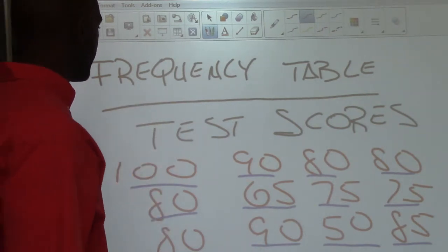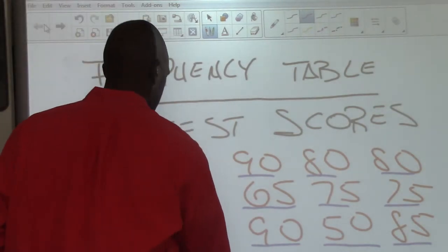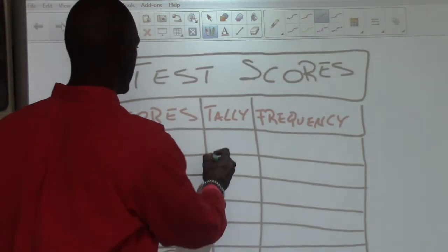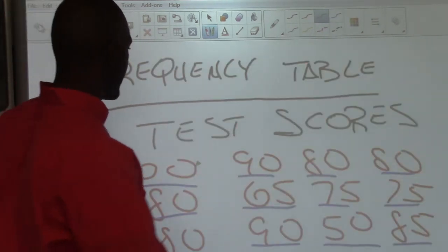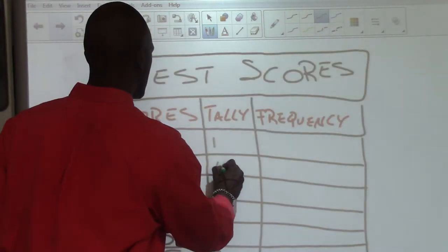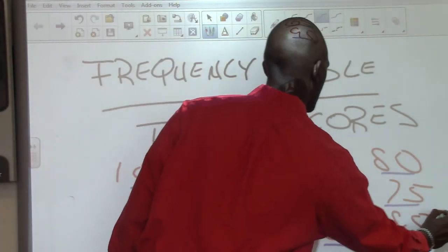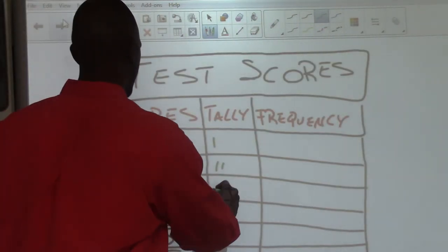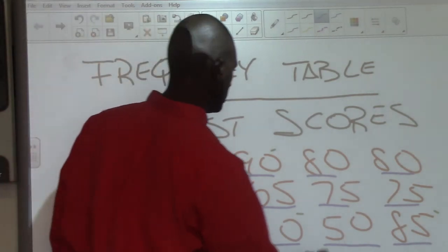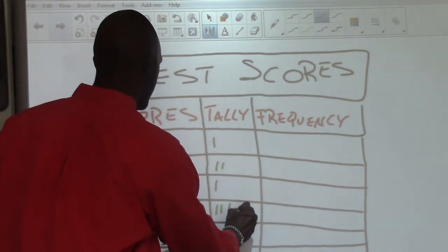We're going to go back to our original set of data and count the number of times each score appears. We received a 100 only one time, so one tally mark. For 90, we get two tally marks. For 85, we have one 85, so one tally mark. For 80, we have one, two, three, four 80s, so 80 gets four tally marks.